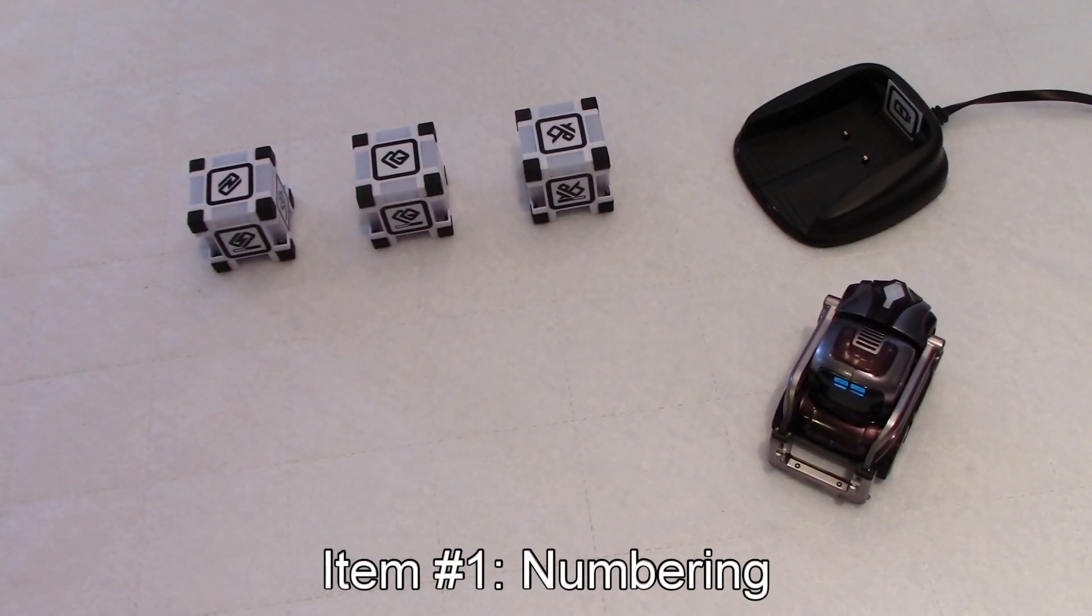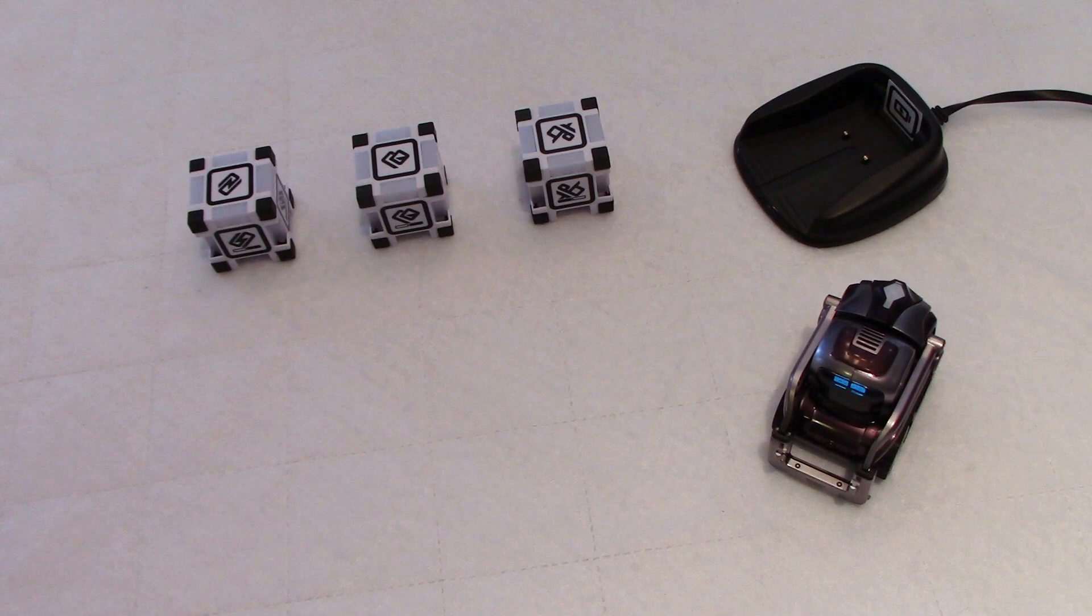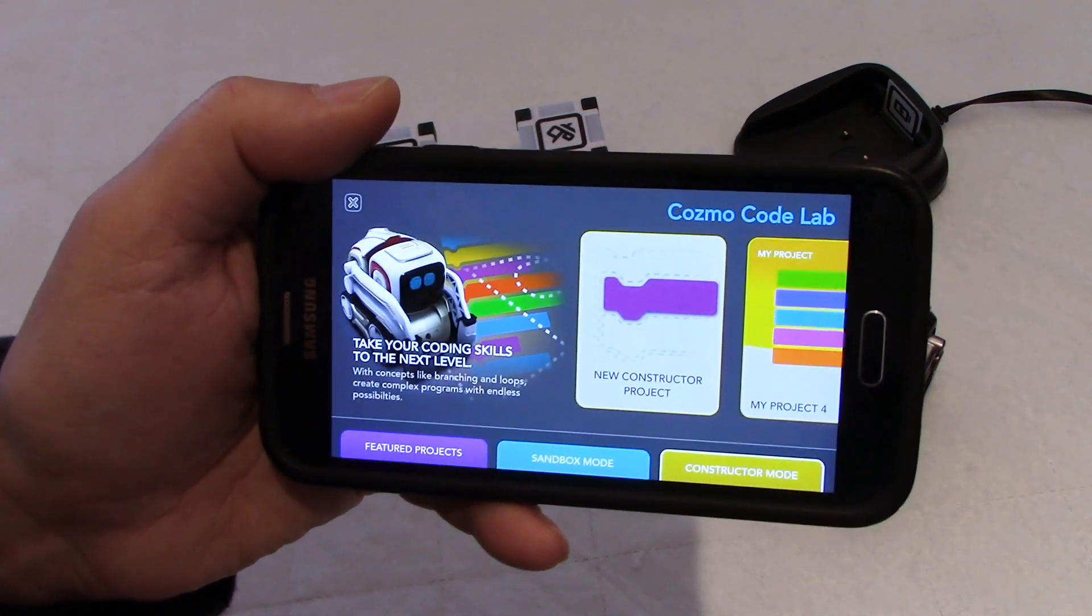The first thing I want to talk about is cube numbering. The cubes look similar but they have a different number from 1 to 3 and that's very important when you start to do some coding.